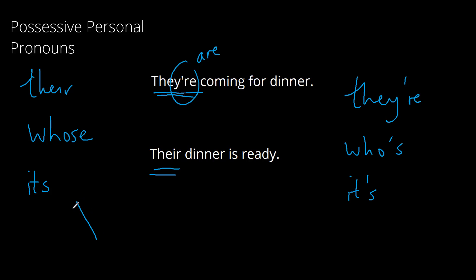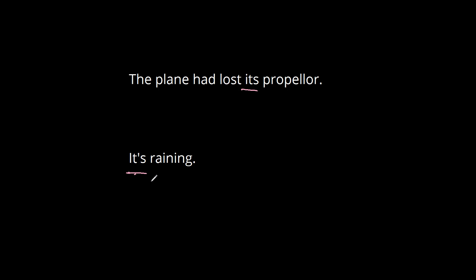If you can think of the possessive personal pronouns as showing that something belongs to something else, and if you can think of the other contractions as showing that there's a verb missing, then it's easy to distinguish them. The simple test you can do to see which one you need is to just read the sentence with it is in it and see if that makes sense. If you were to say the plane had lost it is propeller, you would go — well, that's not right. So in this case its without the apostrophe is correct because the propeller belongs to the plane. Whereas in the second one, it's raining — it is raining — that does make sense. Don't be embarrassed if you make this mistake, because even very experienced English students in senior level university courses sometimes make this error.